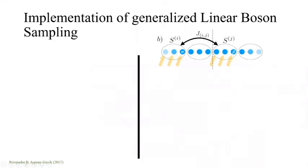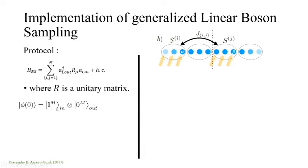Let me describe our work on implementation of generalized linear boson sampling. This experimental setting is inspired by Puri, Blais, and Devoret in 2017. The protocol for the original boson sampling is that we start from regular bosons. There's R matrices and we cook up this Hamiltonian.